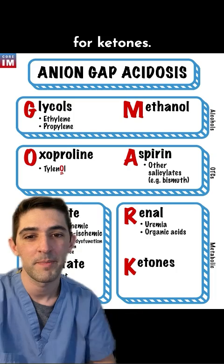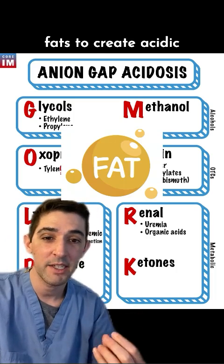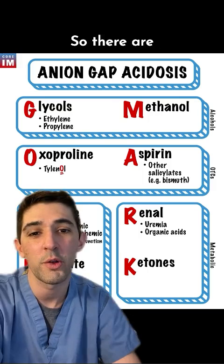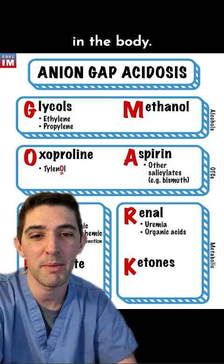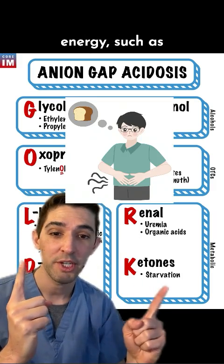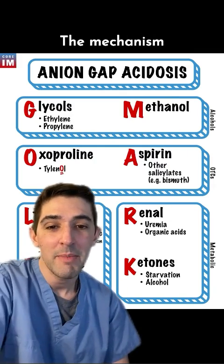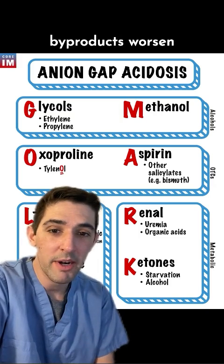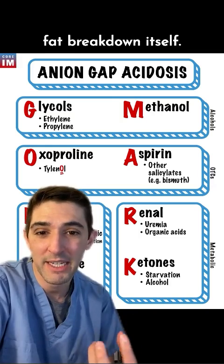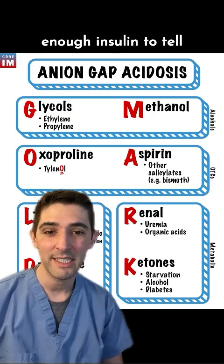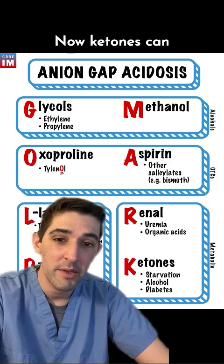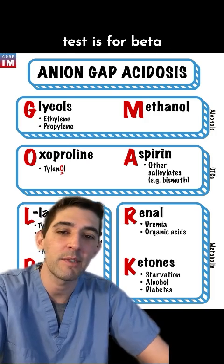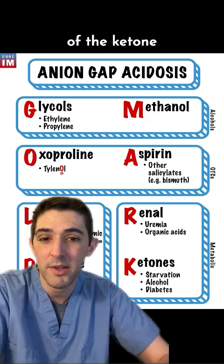K stands for ketones. When we're low on energy, our body breaks down fats to create acidic ketones. Insulin, released when we eat, shuts off ketone production. There are three common scenarios: starvation, where you need more energy; heavy alcohol use, where alcohol byproducts worsen the ketogenic effect of starvation and cause direct fat breakdown; and diabetes, where insufficient insulin fails to stop ketone production. Ketones can be detected in the urine, but should be confirmed and quantified with blood testing — the most common test is for beta-hydroxybutyrate, a byproduct of the ketone acetoacetate.